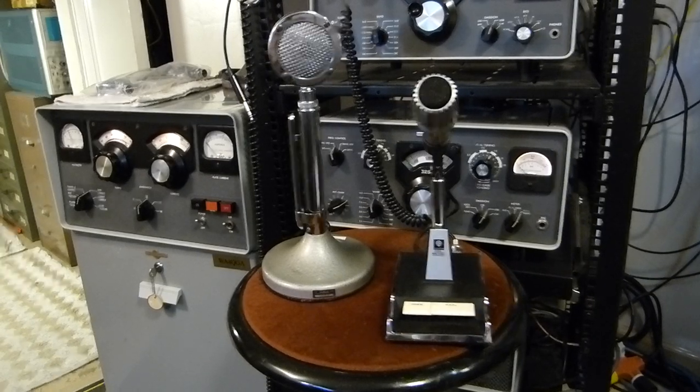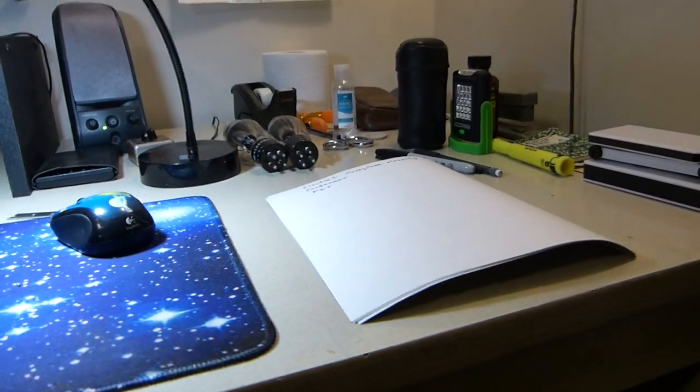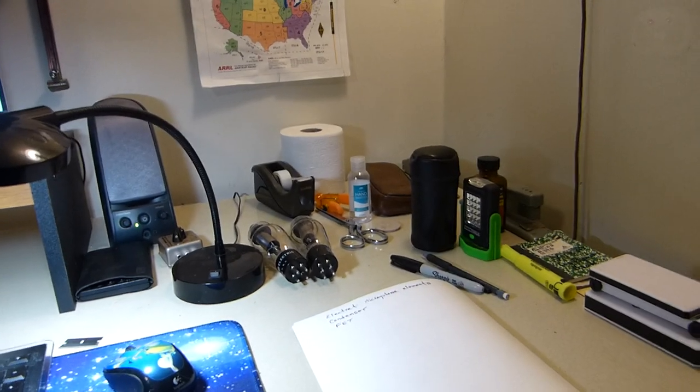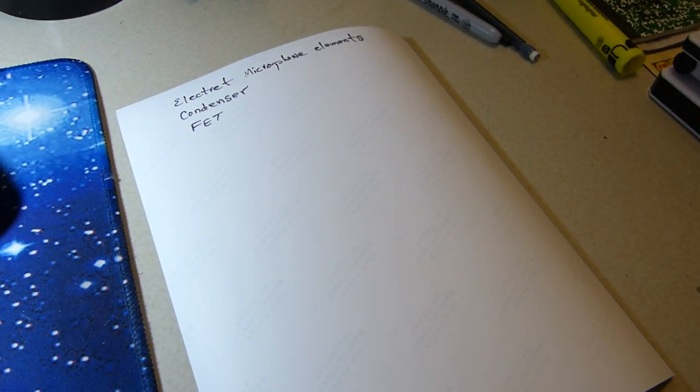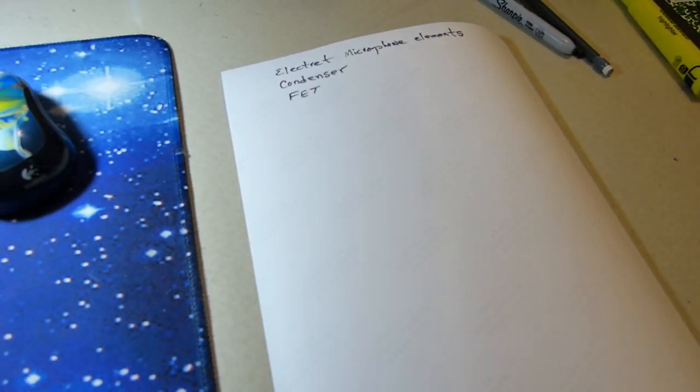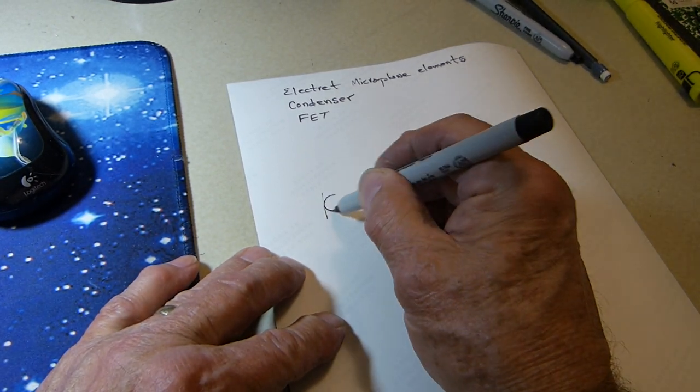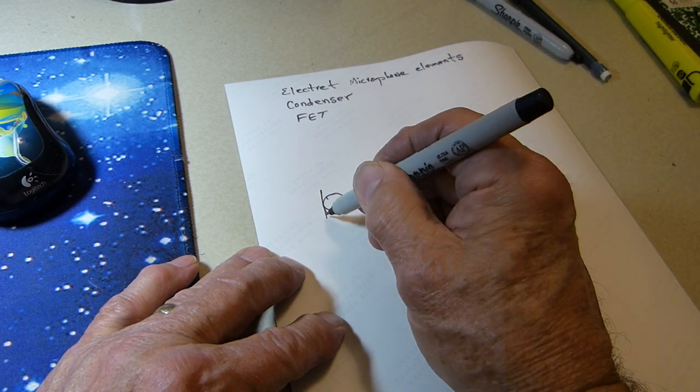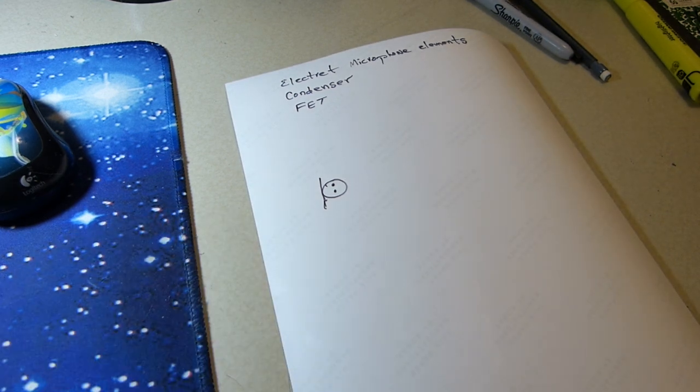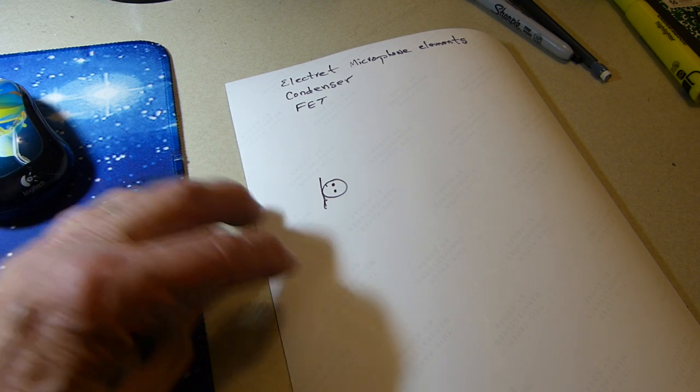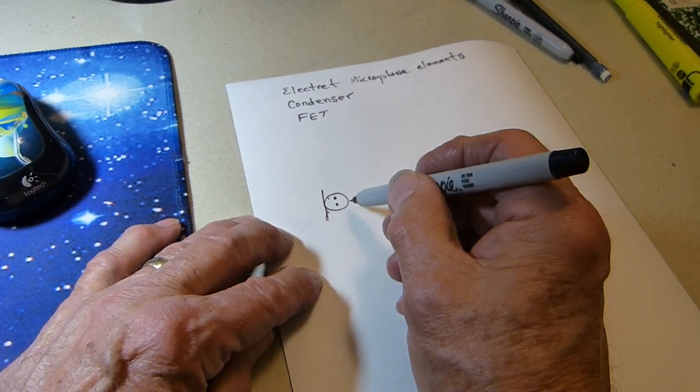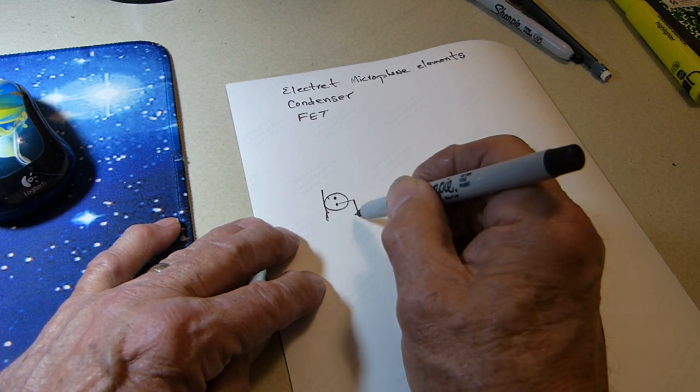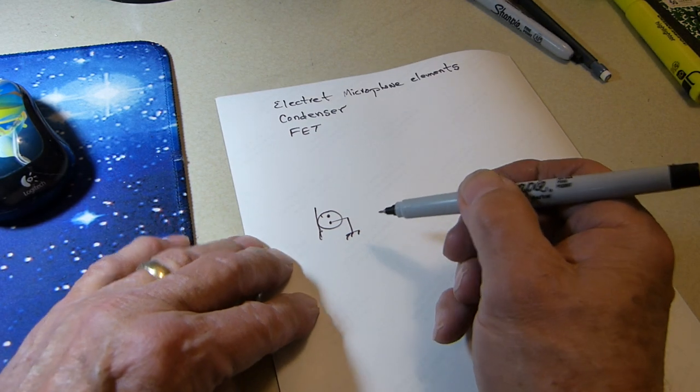Let me draw a schematic of what these things are because I can explain it better as I draw it. The little FET microphones are often drawn like this with a circle and two terminals. Some have three, but usually two of them are connected together because of the ground. One side of the microphone is grounded, and this is all built into your microphone itself.